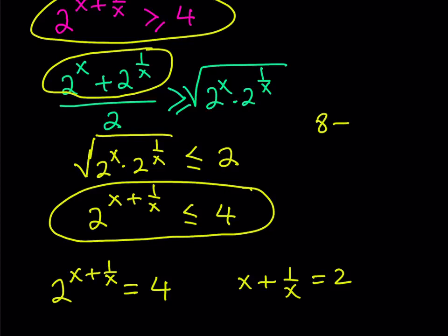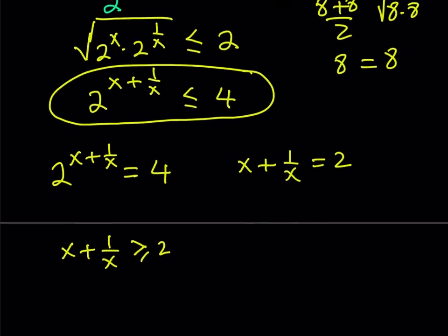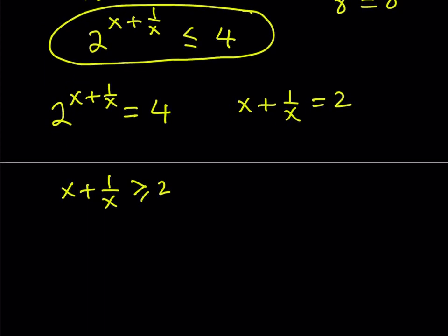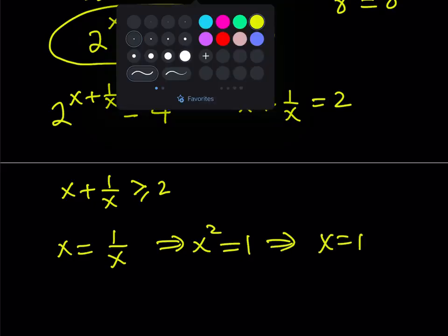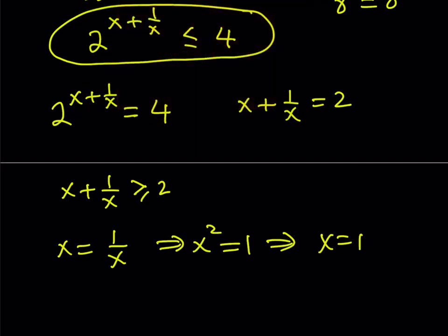For example, take 8 and 8, right? If you add them up and divide by 2, you get 8. If you multiply them and square root the result, you get 8 so you get the same number. Okay, cool. So this just means that x equals 1 over x. But remember that x needs to be positive. From here, we only get one solution, x equals 1. And that just happens to be the only solution to this equation.